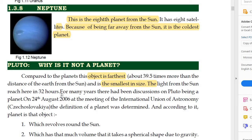The light from the sun takes 32 hours to reach Pluto. For many years there had been discussion on Pluto being a planet. But on 24 August 2006, at the meeting of the International Union of Astronomy in Czechoslovakia, the definition of a planet was determined.